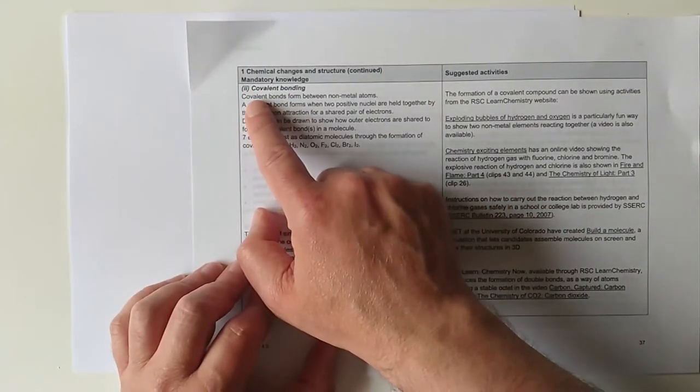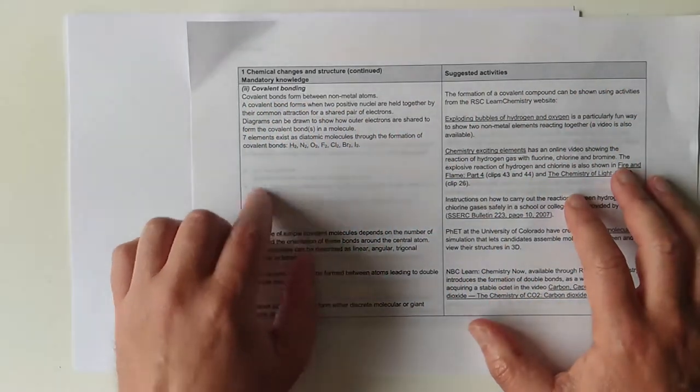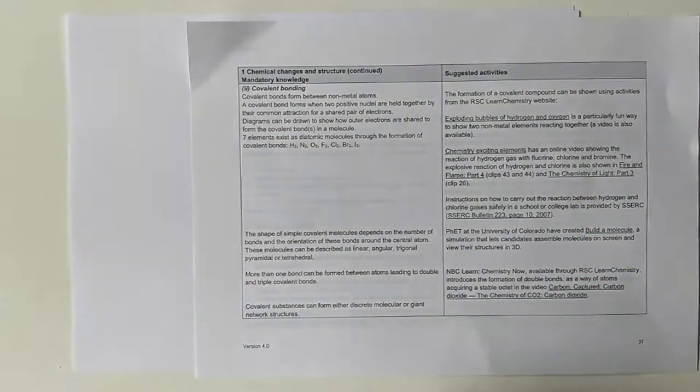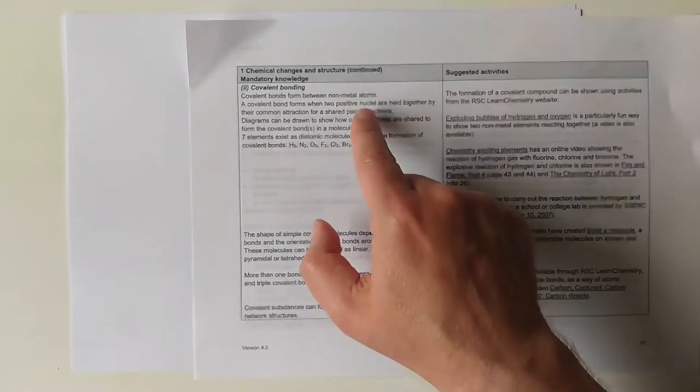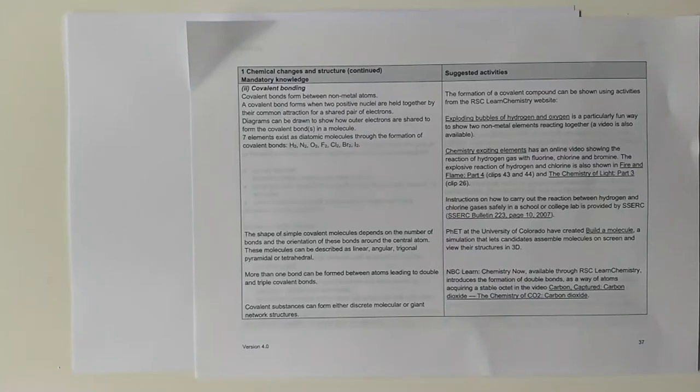The SQA wants you to know that covalent bonds form between non-metals. We covered that last time. They also want you to know that a covalent bond forms when two positive nuclei are held together by the attraction for the negative electrons. That was in a diagram in my last video. If you want to go back and look at covalent bonding 1, I'll put a link in the description.